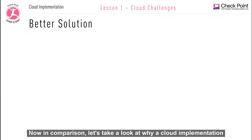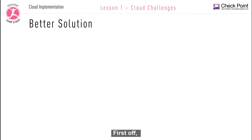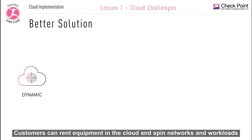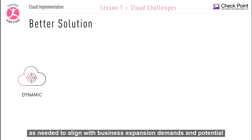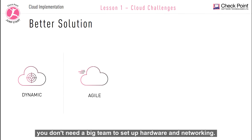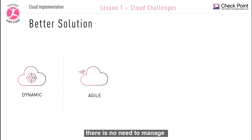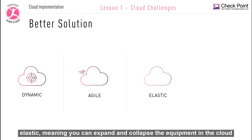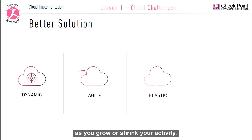Now in comparison, let's take a look at why a cloud implementation might be a better solution. First off, the cloud is dynamic, meaning you only pay for resources that you need — it's like being billed for a utility such as electricity or a heating bill. Customers can rent equipment in the cloud and spin up networks and workloads as needed to align with business expansion, demands, and potential business growth. The cloud is agile — you don't need a big team to set up hardware and networking. You can just spin up a virtual machine in the cloud within minutes, and there is no need to manage the equipment as the cloud provider does that for you.